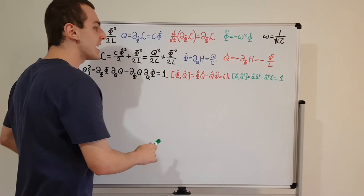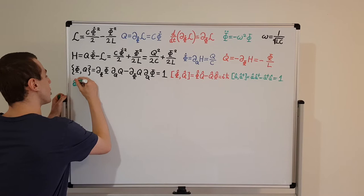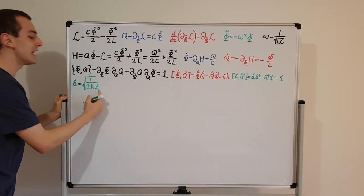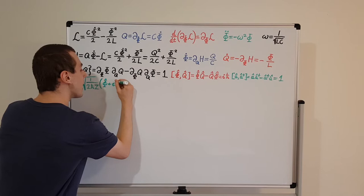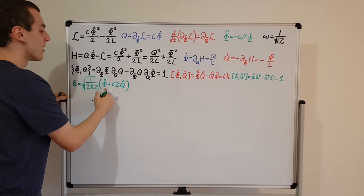Let me write down the definitions of a and a dagger, and then we're going to use them to write the Hamiltonian. A is equal to the square root of 1 over 2 h-bar Z, where Z is the impedance — we'll talk more about this impedance later. Then we multiply all of this by the operator phi-hat plus i times the impedance times Q-hat.